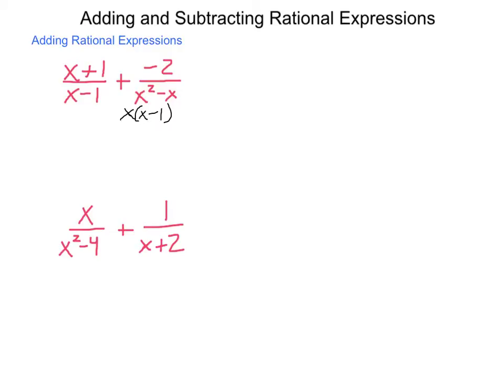Both denominators have an x minus 1. The second one just has an extra x. So I multiply the first fraction by that missing piece in the form of 1 — x divided by x — giving me x squared plus x over x times x minus 1.